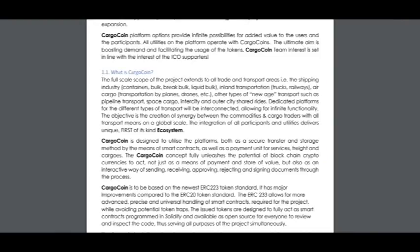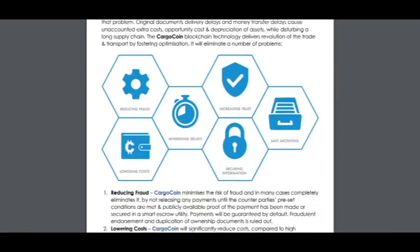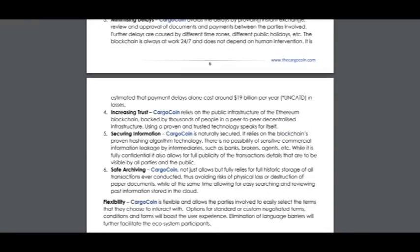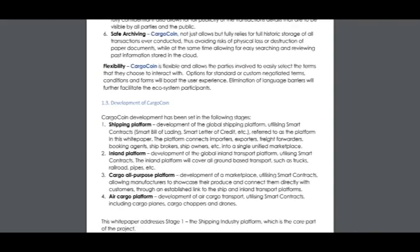Kagocoin is to be based on the newer circa 223 token standard. Here are the advantages of this project: reducing fraud, lowering costs, minimizing delays, increasing trust, securing information, and safe achievement.